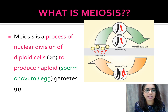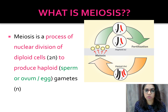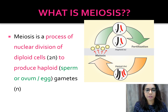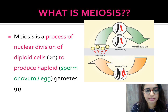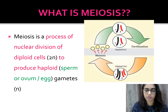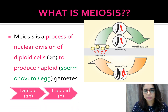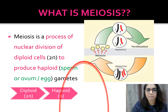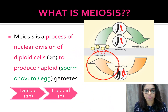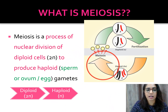Meiosis is the process of nuclear division of diploid cells to produce haploid gametes. For example, a parent cell has 46 chromosomes. When meiosis happens, it produces haploid cells with only 23 chromosomes — either in the sperm or the egg. When fertilization happens, the diploid number of chromosomes is restored. So meiosis produces haploid cells.